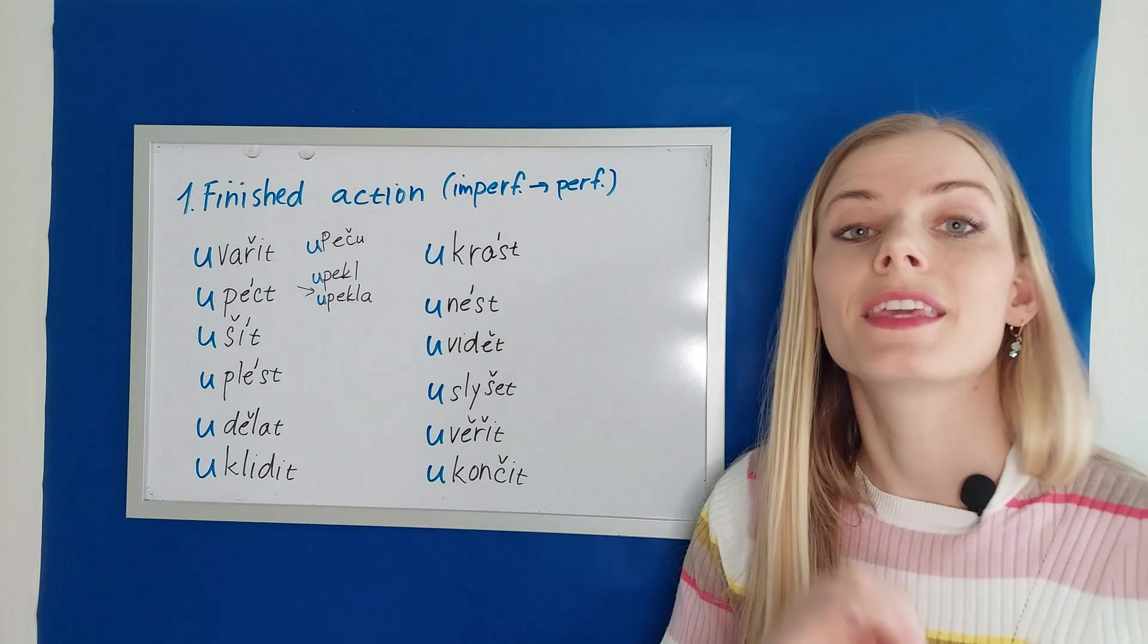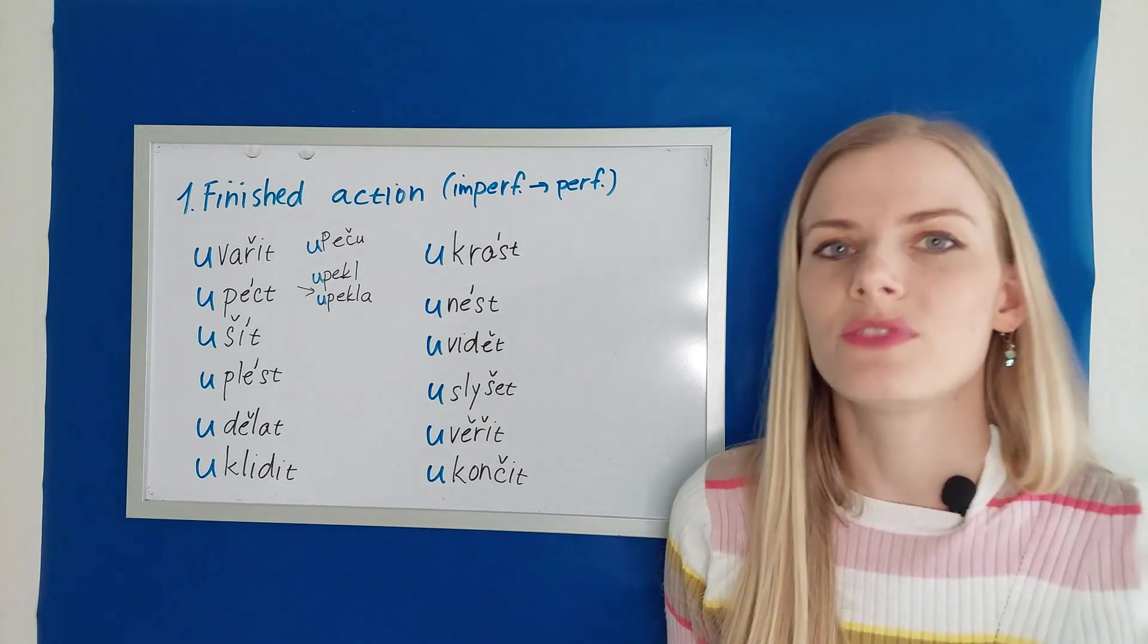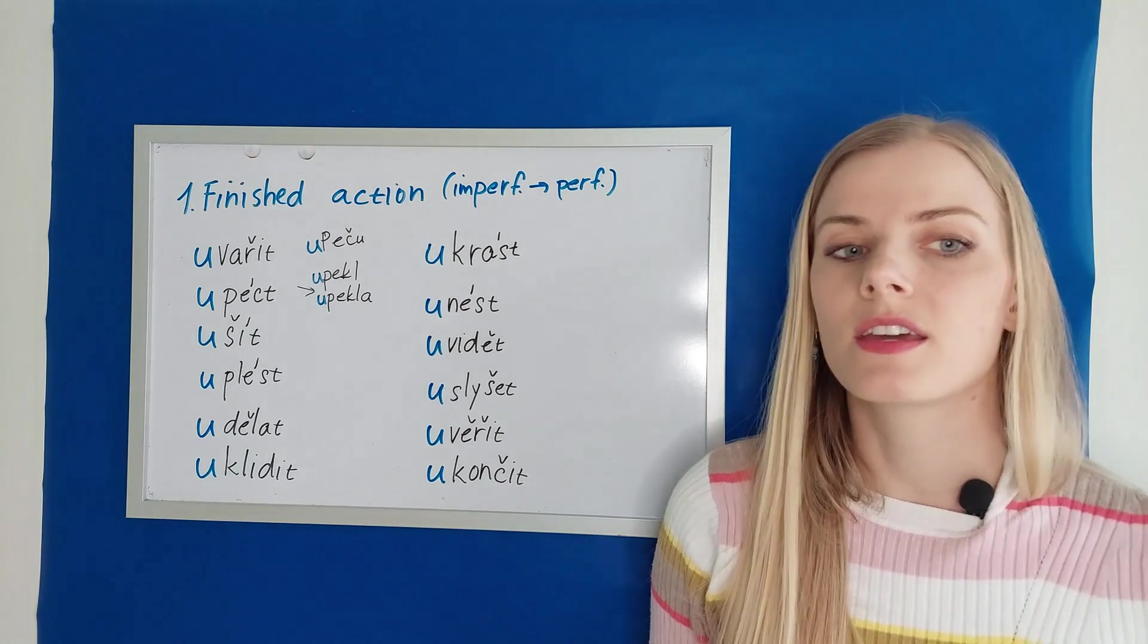What I want you to remember is that these verbs on this board in this category have their forms in the imperfective form. And when you add a prefix u, they become perfective and their form doesn't change. Vařit uvařit. Péct upéct. Šít ušít. Dělat. To do and make. And udělat. To finish making, finish doing. In the dialogue I said, co bych pro tebe neudělala. What wouldn't I do for you? I would do anything for you in this meaning.